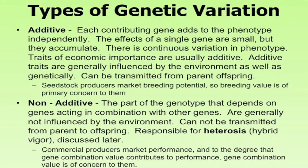Looking at types of genetic variation: the first is additive, where each contributing gene adds to the phenotype independently. The effects of a single gene are small but accumulate over time, producing continuous variation in the phenotype. Traits of economic importance are usually additive, generally influenced by the environment as well as genetics, and they can be transmitted from parent to offspring. Seedstock producers market breeding potential — the breeding value of a bull is their primary concern.